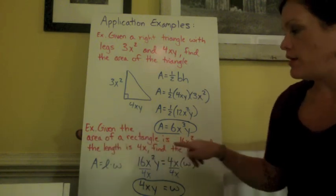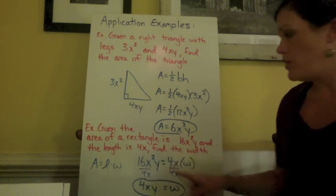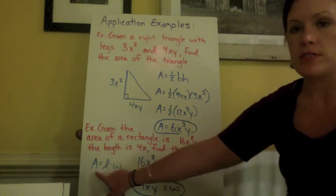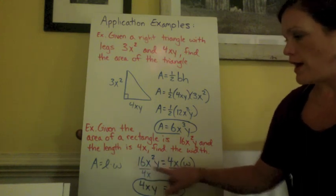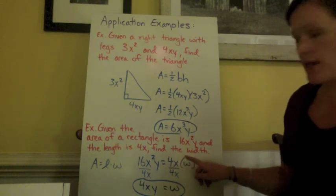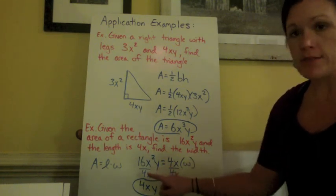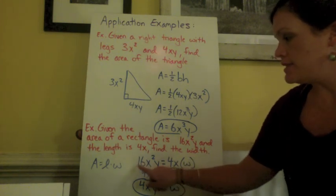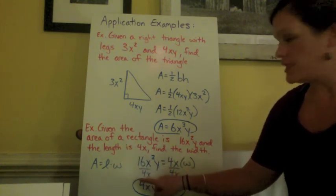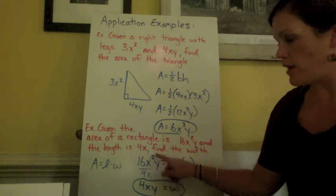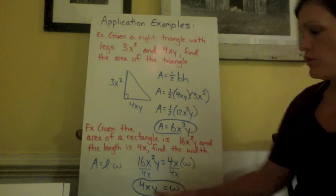For my second example, I'm given the area of a rectangle is 16x squared y, and the length of the rectangle is 4x, and I'm asked to find the width. I know the area of a rectangle is simply length times width. So I have 16x squared y as my area. I put the length is 4x that they gave me, and I have the width in parentheses. I'm looking for the width. So I divided both sides by 4x in order to get w by itself. Dividing 16x squared y by 4x is the dividing powers property. So I need to subtract my exponents. I divided the numbers. So 16 divided by 4 would give me 4. I have x squared and a 1 at the bottom. So 2 minus 1 is just 1. And then y stays in the numerator. I just bring it down. So my final answer would be that the width of my rectangle is 4xy.